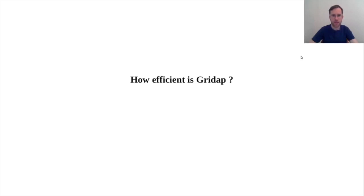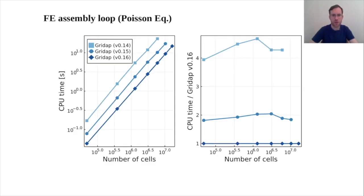I think that these examples make clear that with the latest version of GridApp, one can specify complex weak forms in a convenient way. But the question is, how efficient is the resulting finite element code? And the answer is that we have been improving the performance of the latest version. So you can see this with that example.